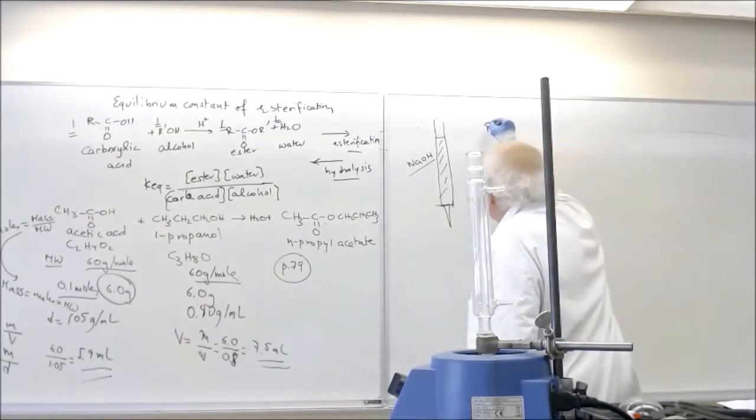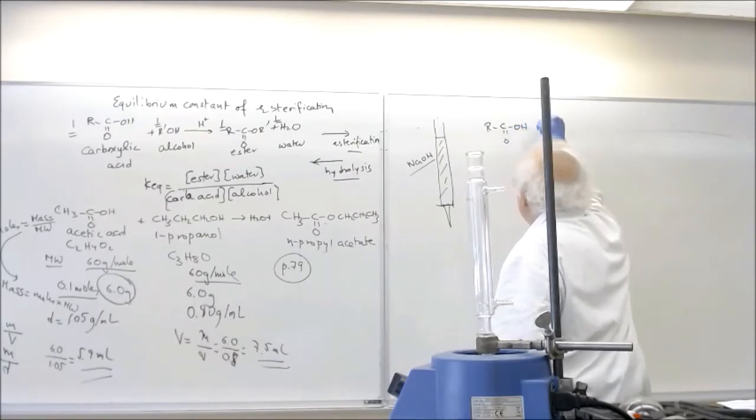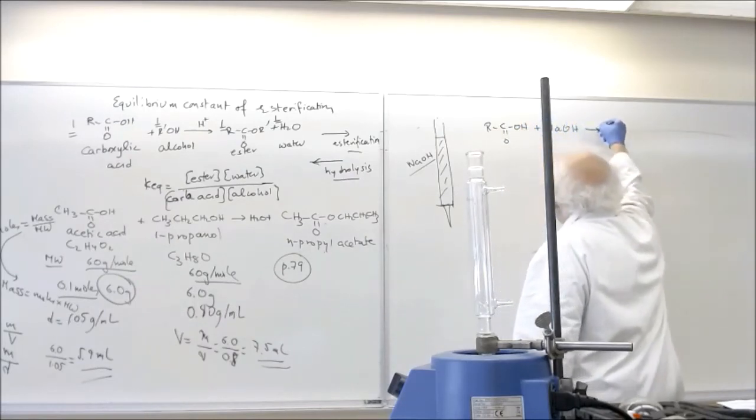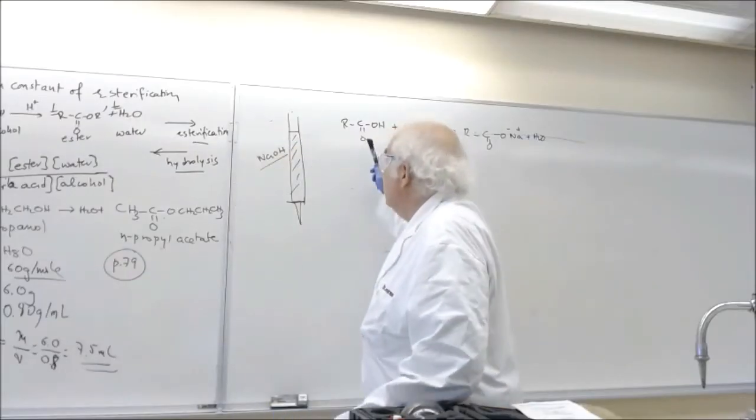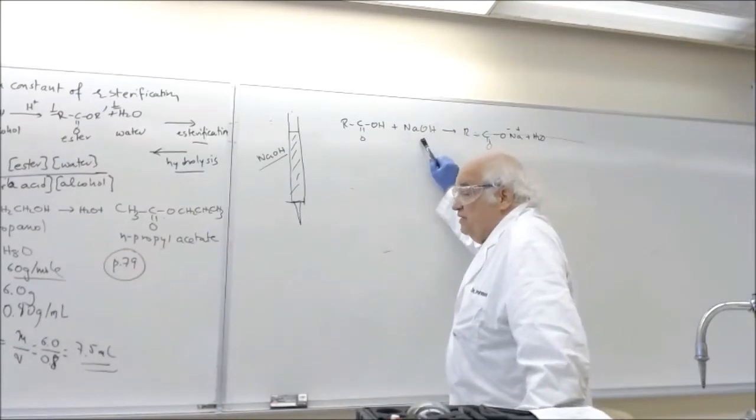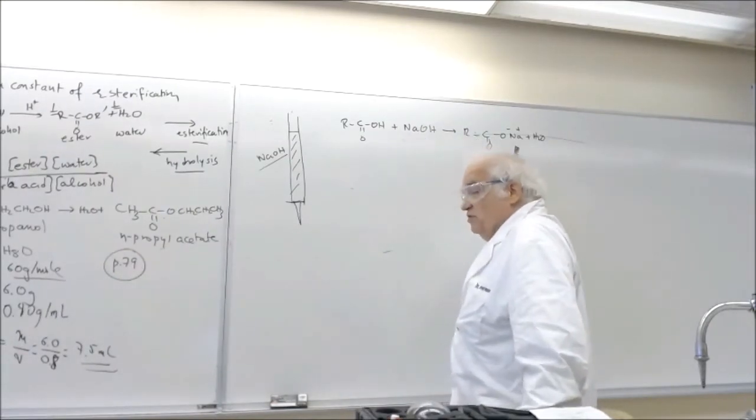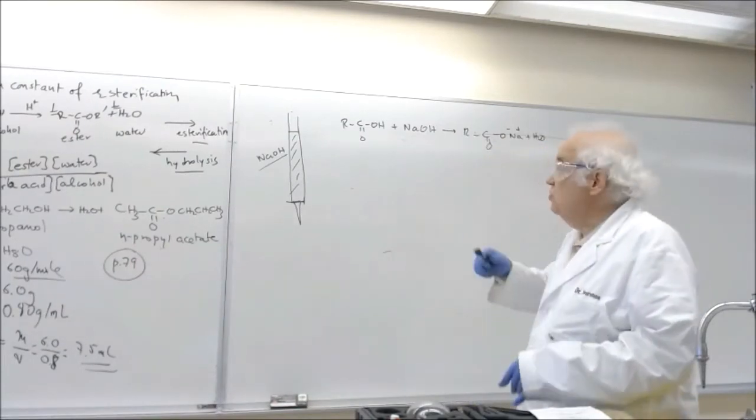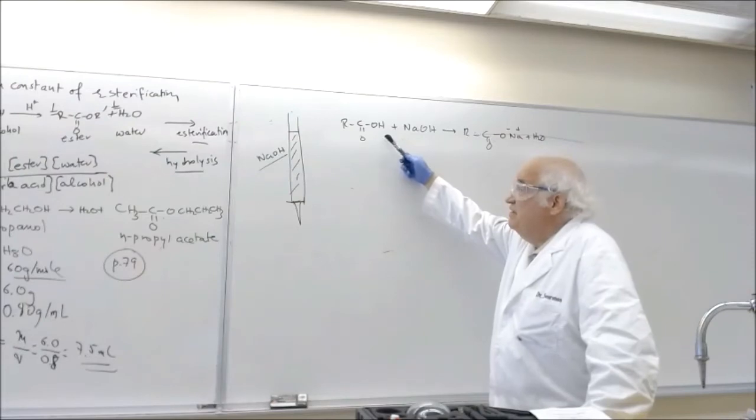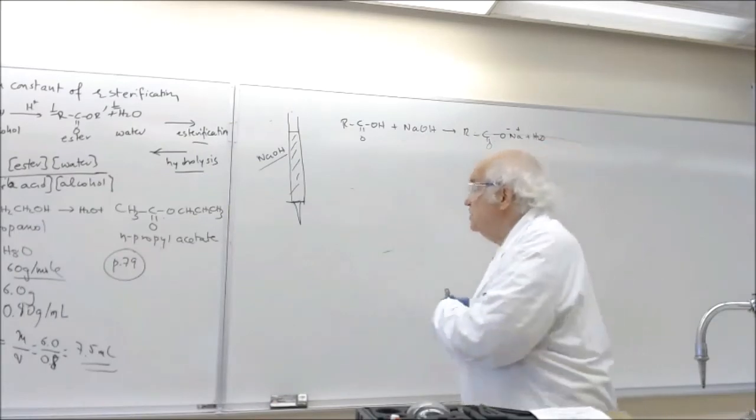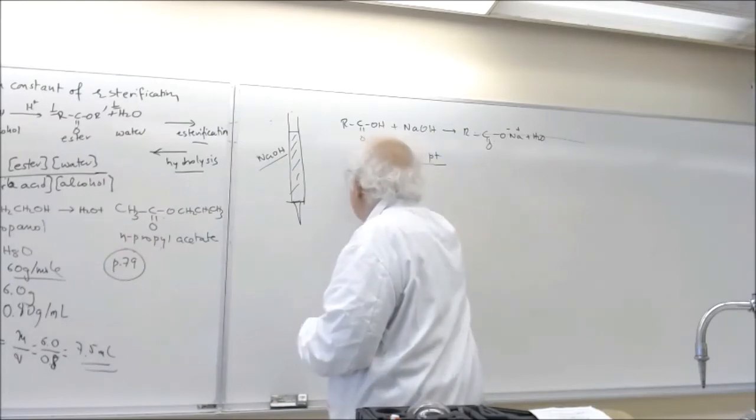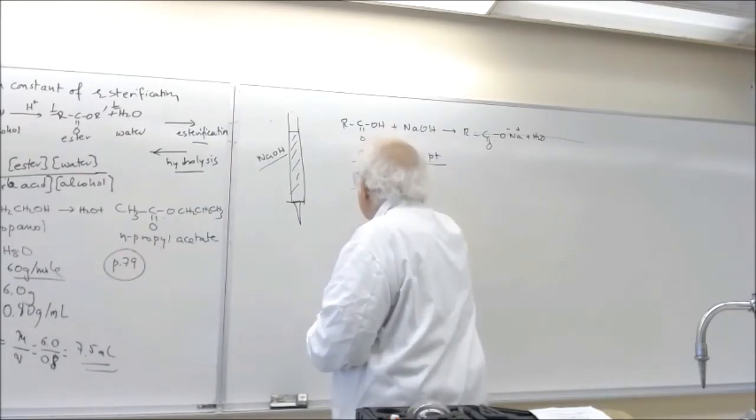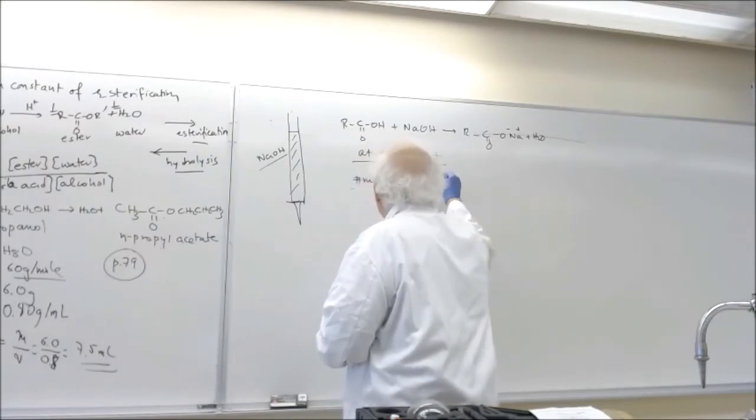Now what you're going to have there is a reaction of a carboxylic acid and a base giving you salt plus water. The problem that we have in this case is that the acid and sodium ethoxide and the salt and water are all a clear solution. So you don't know really when you have the equivalent or the end point of the titration.